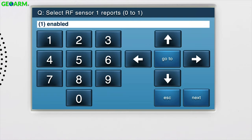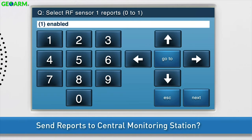Next, choose whether or not to send reports to the central monitoring station. If you would like reports related to the carbon monoxide detector to be sent to the central station, select 1 Enabled. Press the down arrow to go to the next sub-question.